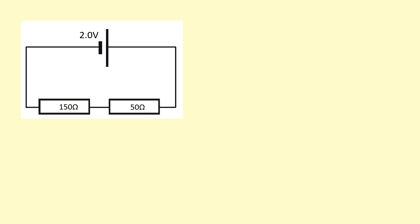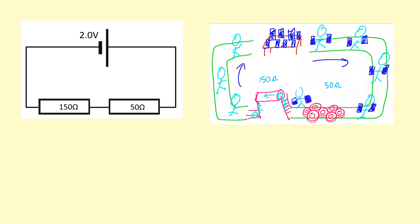Here we have a simple series circuit. Series circuits means that the components are right next to each other, and whatever current goes through one must go through the other. So the current in must equal current out. Here's the model for it — in this case it's going to be 10 milliamps flowing throughout. It's not like the current slows down after it goes through a resistor; it must be held the same throughout.